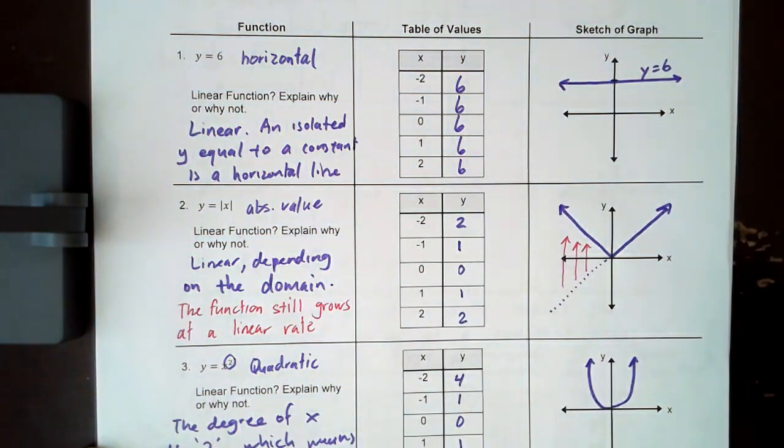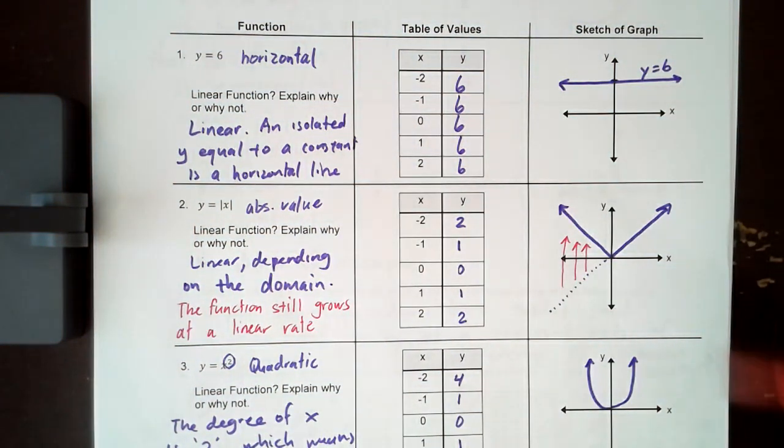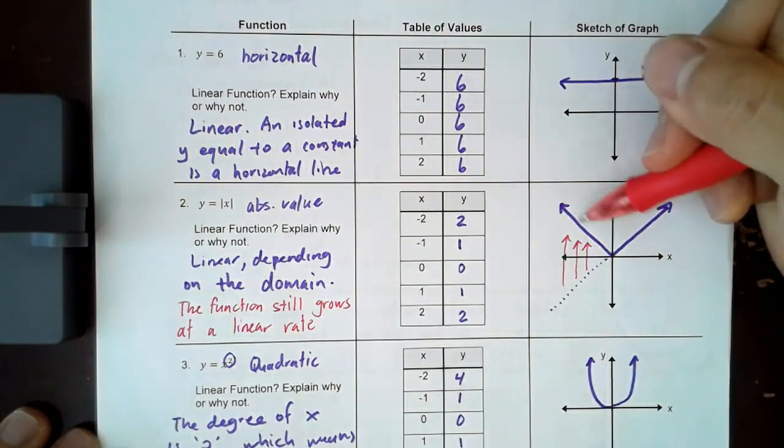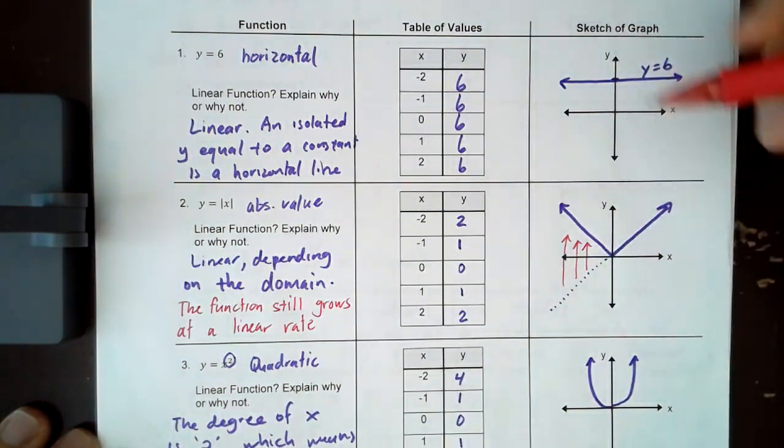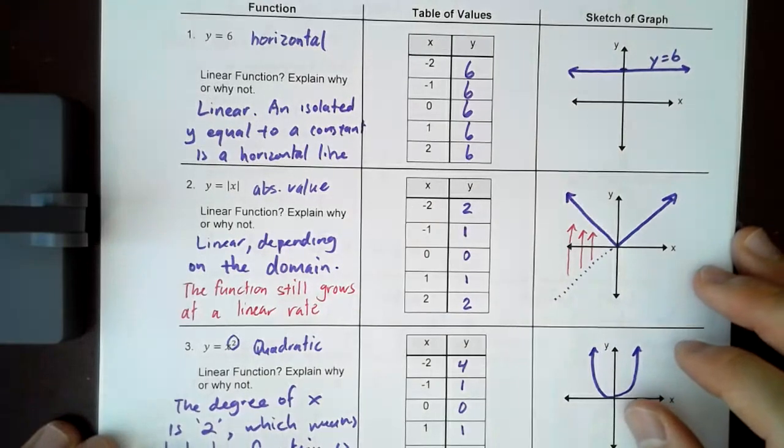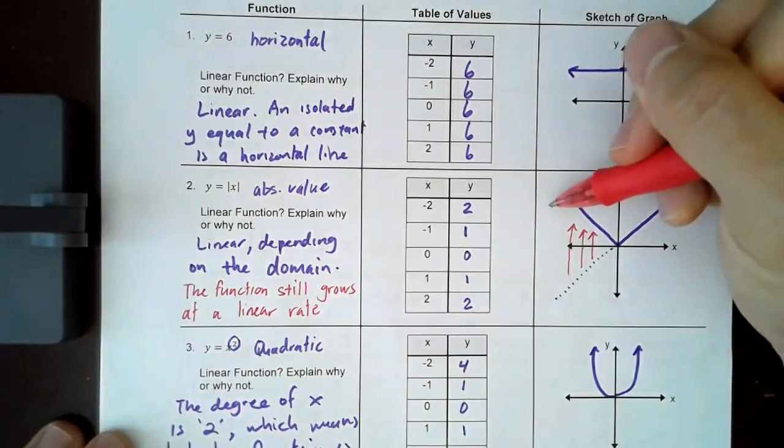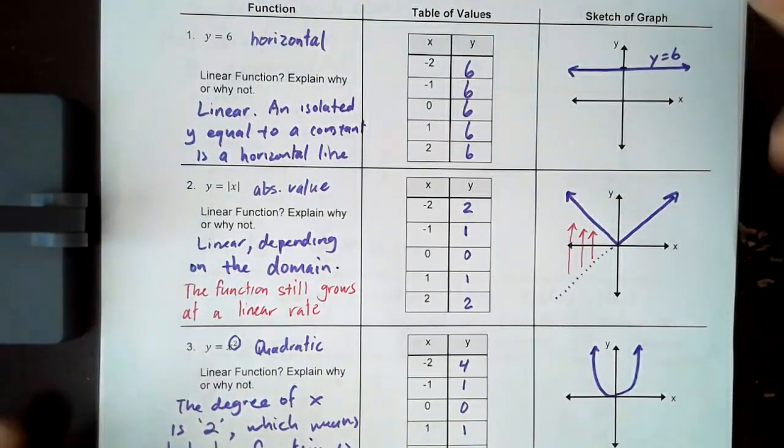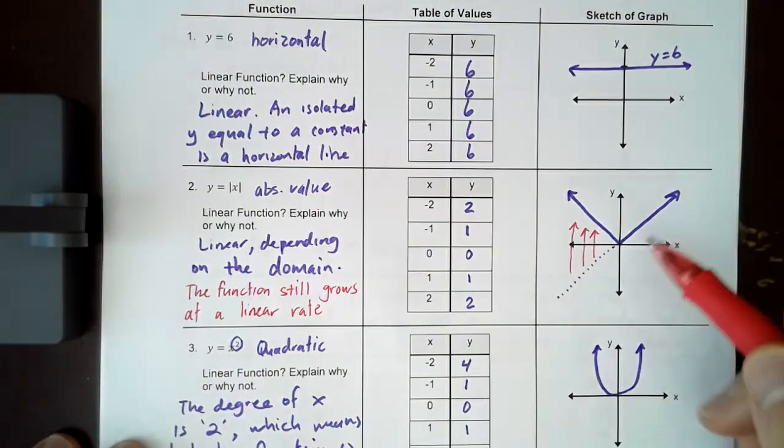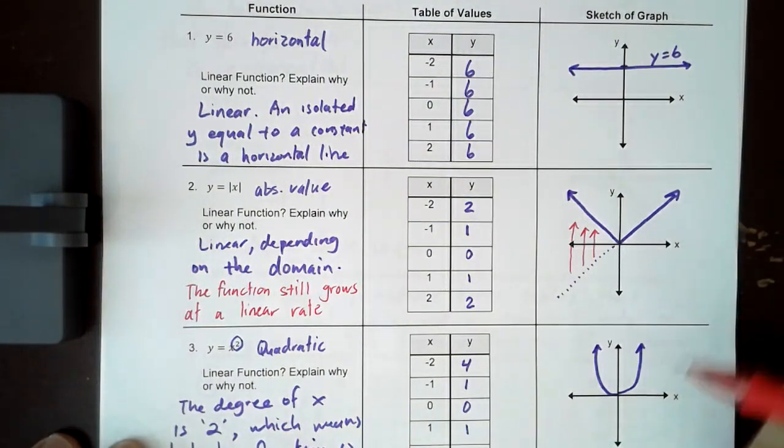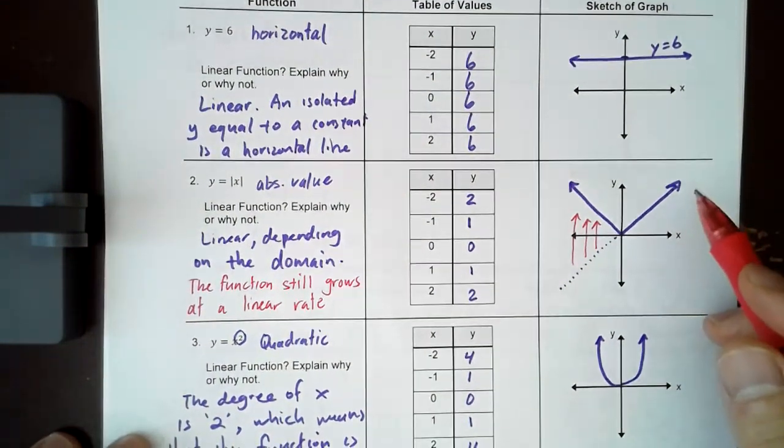The rise over the run, the change in y over the change in x. Now, I did write depending on the domain, because it kind of looks like it's two lines combined, right? Because that's the v shape. So from negative infinity all the way to zero, you have a negative slope. And then from zero to infinity, you have a positive slope.